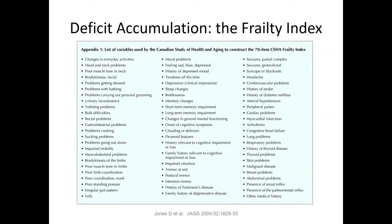Deficit accumulation was brought forward with an index called the Frailty Index, from the Canadian Study on Health and Aging. They defined 70 different items — not just comorbidities, but also functional aspects and family history. The frailty index is calculated by defining a denominator of 70, counting the number of deficits present, and dividing to get a score between zero and one, with 0.21 or higher being in the range of frailty.